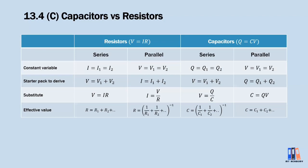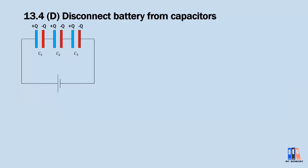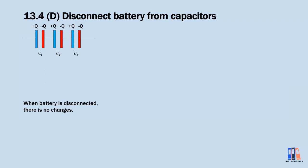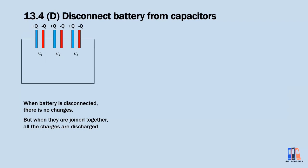Now we look at a special case when capacitors are charged: what happens if we disconnect the battery? Starting with the series circuit — when we disconnect the battery, the capacitors are in an open circuit, so no changes happen initially. However, when you connect one end of the capacitor string to the other end, the negative charge on C₃ can discharge the positive charge on C₁, then the process repeats between C₁ and C₂, and continues until all capacitors are fully discharged. So for a series circuit with the battery disconnected and ends joined, the charge discharges to zero and the potential difference across all capacitors becomes zero.